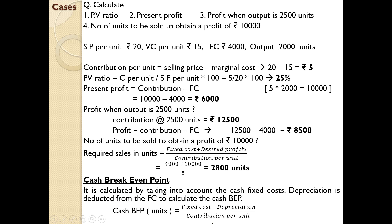The equation for cash break-even point is: fixed cost minus depreciation, divided by contribution per unit. This is the same as the break-even point equation but with depreciation deducted from fixed cost, since depreciation is the most important non-cash item. Apart from depreciation, they might also give interest as a non-cash item — so when both depreciation and interest are given, deduct both from fixed cost. We will discuss the various methods for computing break-even analysis in the next session.